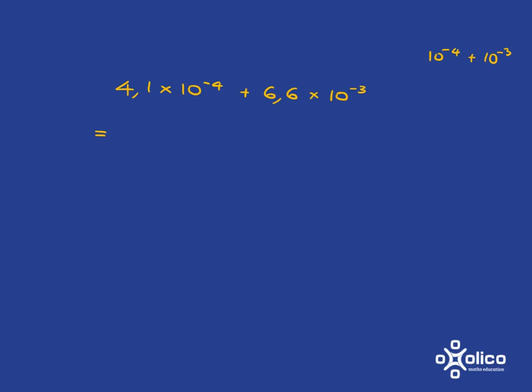So let's do that quickly now. Putting this one back into standard form, the first one, we've got to go back 1, 2, 3, 4. So it looks like that, 0.00041.